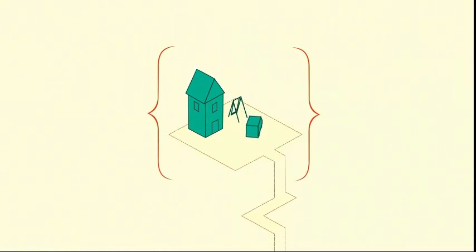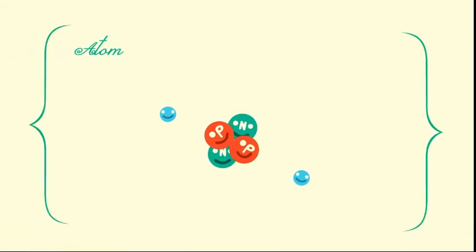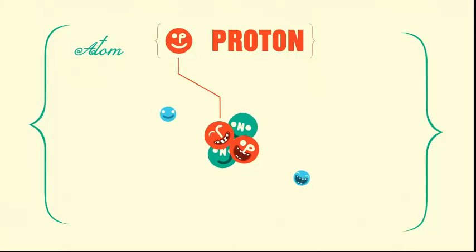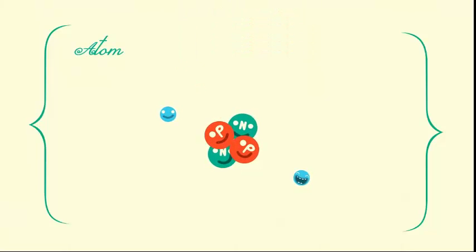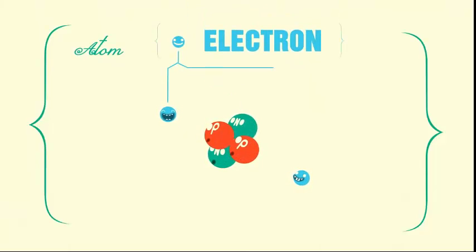You probably know that all stuff is made up of atoms, and that an atom is a really tiny particle. Every atom has a core made up of at least one positively charged particle called a proton, and in most cases some number of neutral particles called neutrons. That core is surrounded by negatively charged particles called electrons.